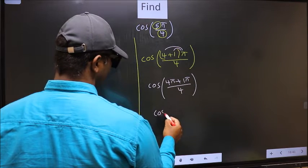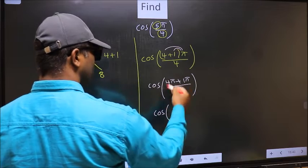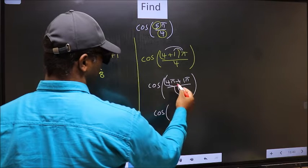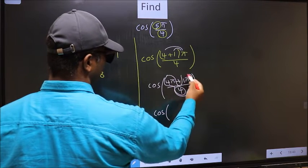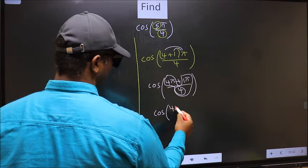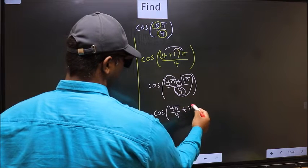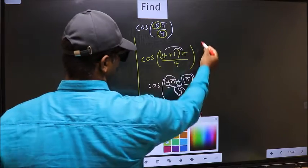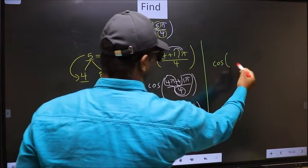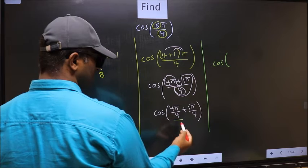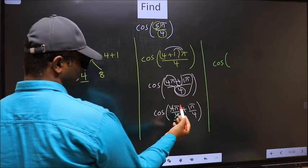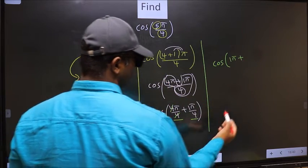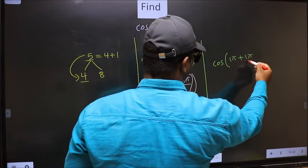Now you should split the denominator. That is 4π/4 plus 1π/4. Next, you should cancel 4 in the first term. We get 1π, plus, with no change, 1π/4.